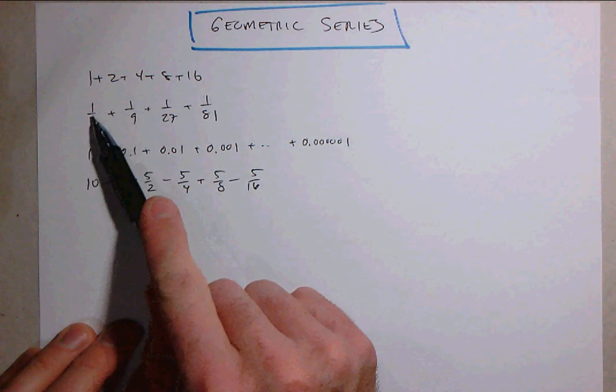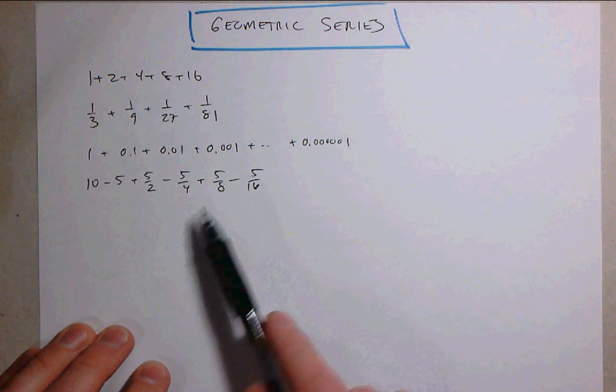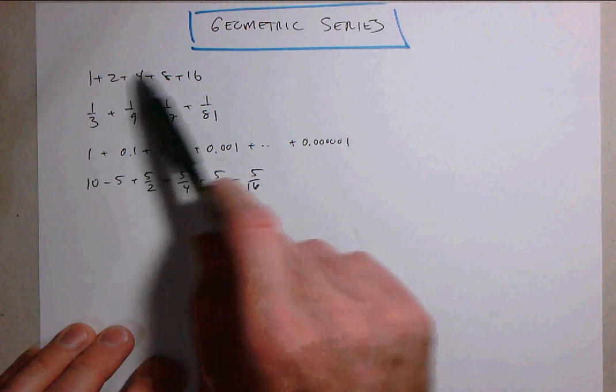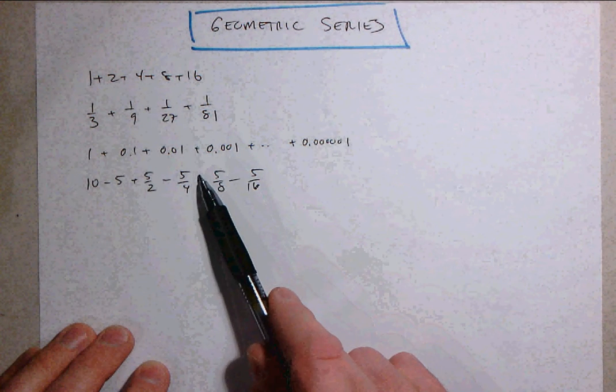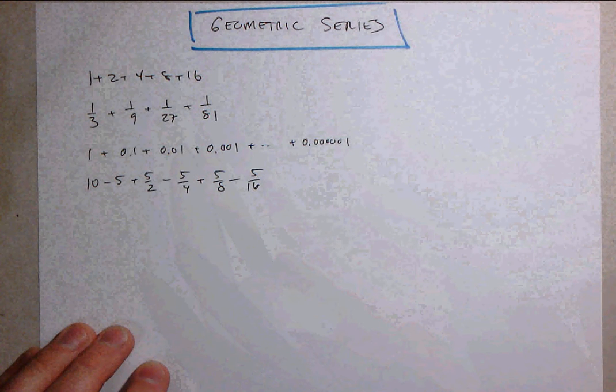Here we're multiplying by a third to get from term to term and so each of these series is a geometric series. It's a sum of a geometric sequence.